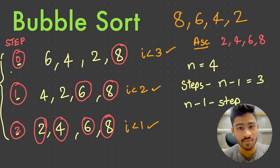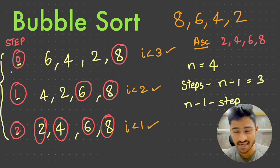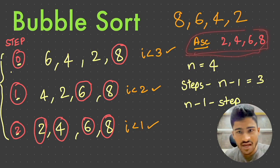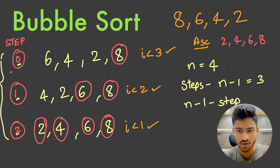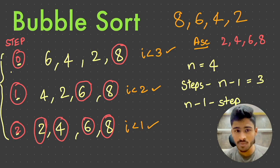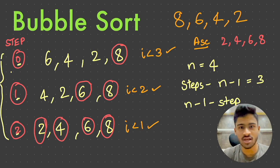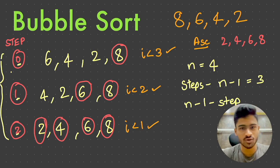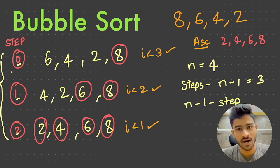In the next video, we will build the code for bubble sort. This is bubble sort for ascending order. For homework, try to change the algorithm to work in descending order — just a small change. If you found this video helpful, please like the video and share it with your friends. Thanks!